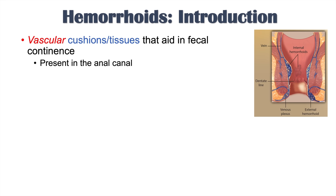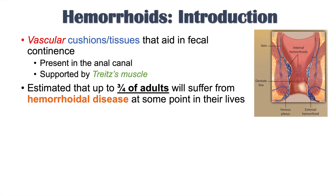Hemorrhoids are present in the anal canal and they're supported by a muscle known as the tritesus muscle. They only cause a problem when there are signs and symptoms — if they become irritated or enlarged. It's estimated that approximately three quarters of adults will suffer from hemorrhoidal disease at some point in their lives.